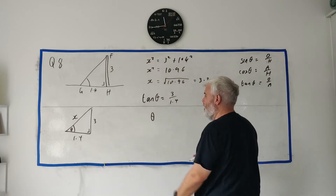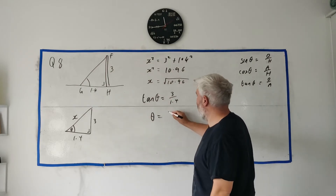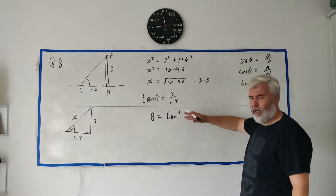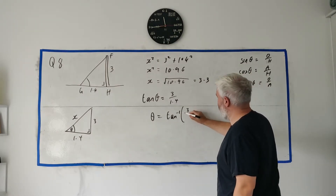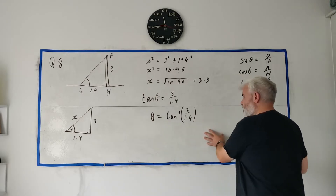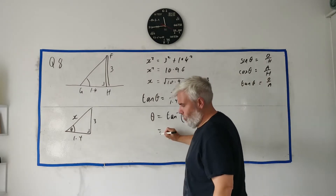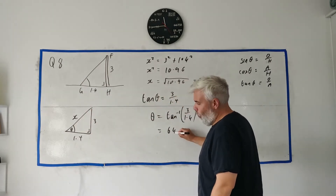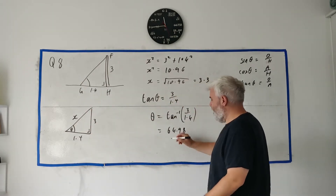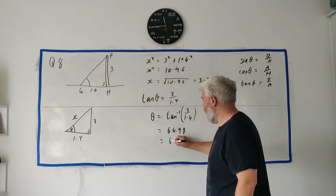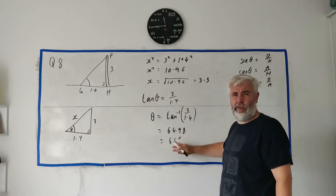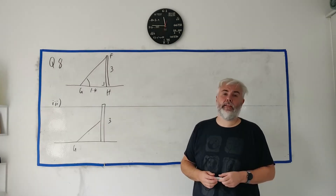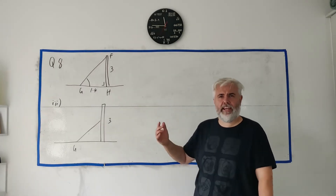We don't want tan theta, we want theta. To get rid of tan, we take the inverse tan of both sides - on your calculator that's tan to the power of minus one. Put it into your calculator and you get 64.98. Rounded to the nearest degree, that's 65 degrees - which is what they already told you the answer was, so no surprise there.